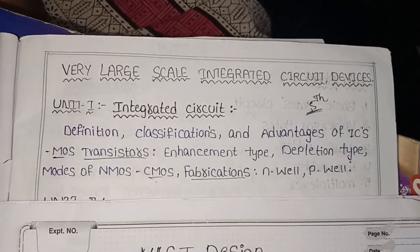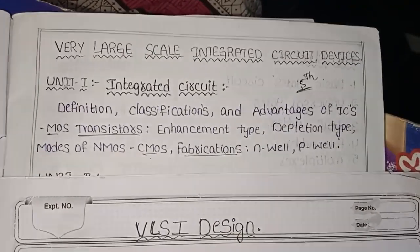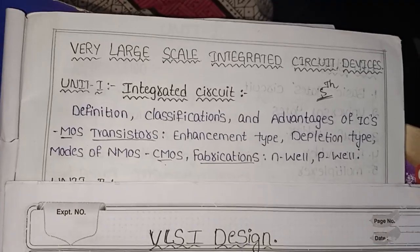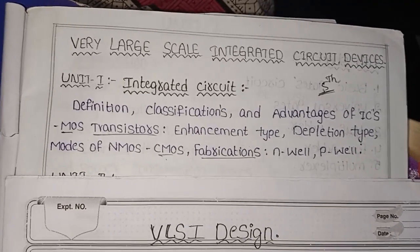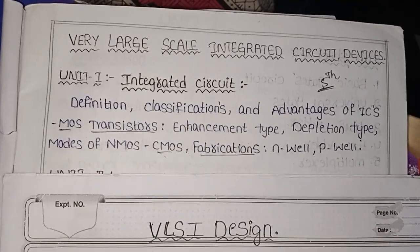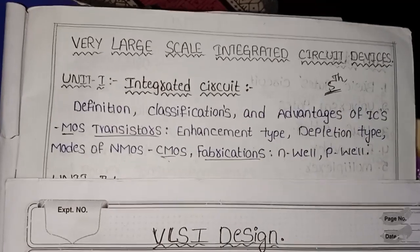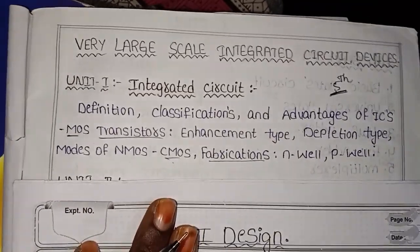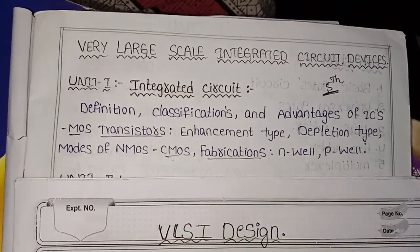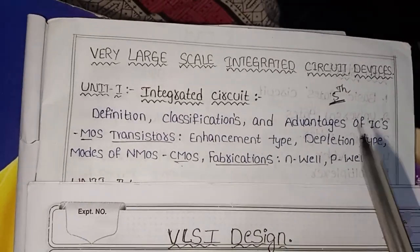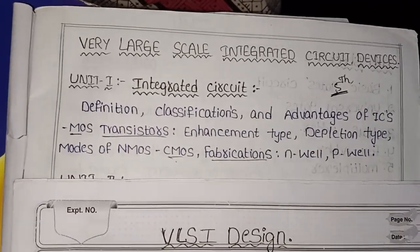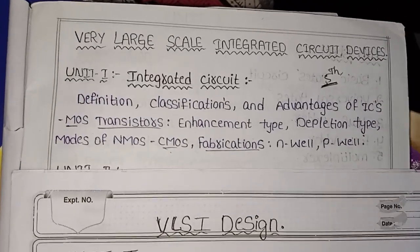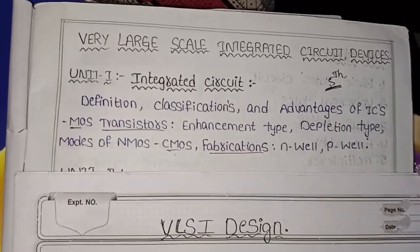We are going to talk about the important questions. This is the 5th Semester Electronics Paper. We are going to discuss it unit-wise. Every unit has 20 marks, and we will talk about the chances of scoring 20 marks.